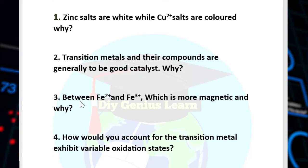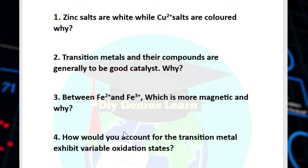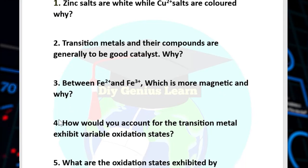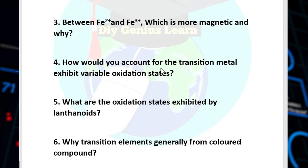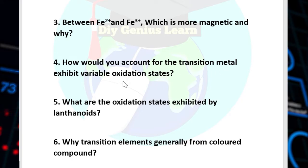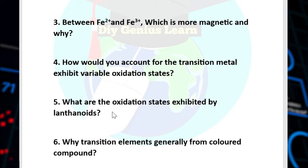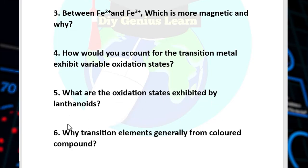Question number 3: Between ferrous 2+ ion and ferric 3+ ion, which is more magnetic, and why? Question number 4: How do you account for the fact that transition metals exhibit various oxidation states? Question number 5: What are the oxidation states exhibited by the lanthanoids?